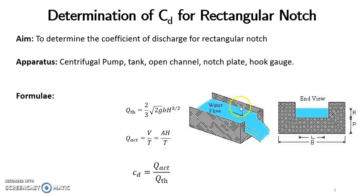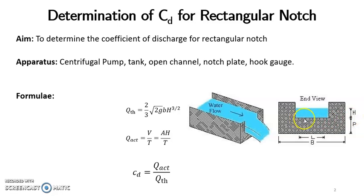In this image it is very clear that water is made to flow through this horizontal channel and through this rectangular notch. Here we have an end view where we can clearly visualize the rectangular cross section of the rectangular notch. L represents the width or breadth of the rectangular notch, which in our experiment is 12 centimeters, that is 0.12 meters. B indicates the width of the channel, H is the head over the notch, and the crest level is represented by P.